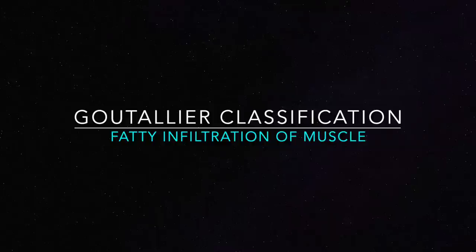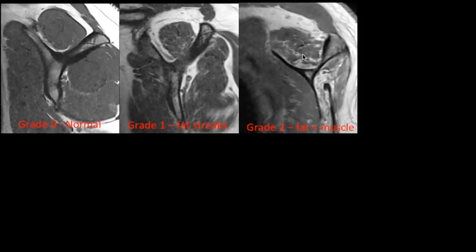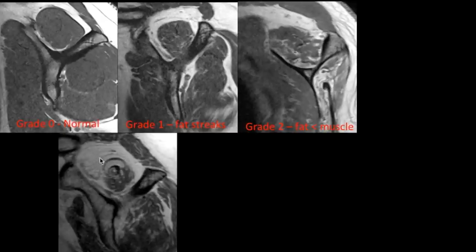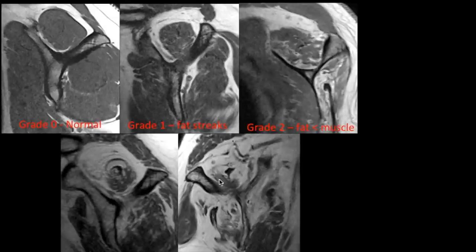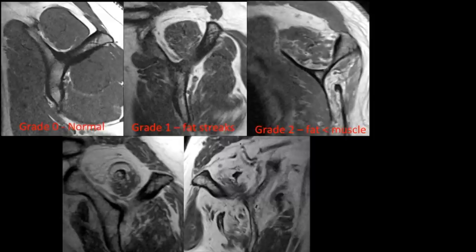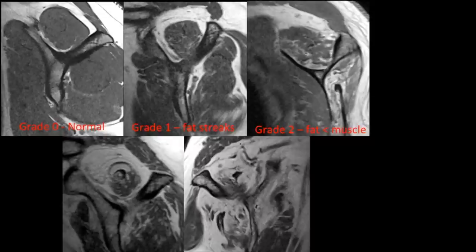Fatty infiltration of the muscles is graded using the Goutallier classification. Grade 0 — no fat, normal; Grade 1 — a few fatty streaks; Grade 2 — more fat than Grade 1 but fat is still less than muscle; Grade 3 — fat and muscle are equal; Grade 4 — fat exceeds muscle. Fatty infiltration and muscle atrophy are important prognostic indicators, with fatty infiltration being more important because muscle bulk can improve with post-operative rehabilitation, whereas fatty infiltration is usually irreversible. Higher grades carry poorer prognosis and require longer rehabilitation periods.